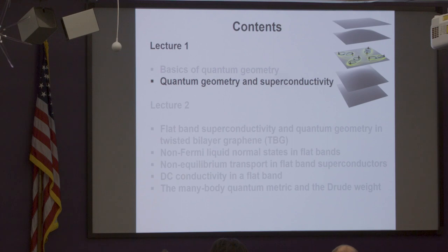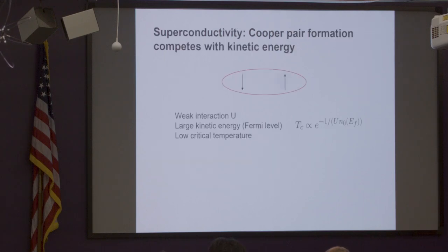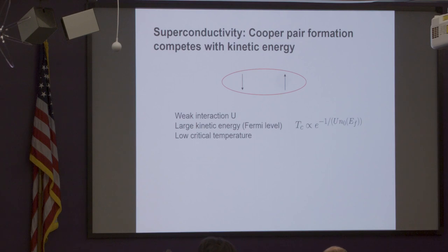That was the basics of quantum geometry — we go to superconductivity next. Many people were interested in Berry curvature before, but why was the real part of the quantum geometric tensor kind of ignored? I think people didn't realize that it's useful for something, because Berry curvature in condensed matter physics — the big thing is of course quantum Hall and this kind of topology — people just didn't know this quantum metric was useful.